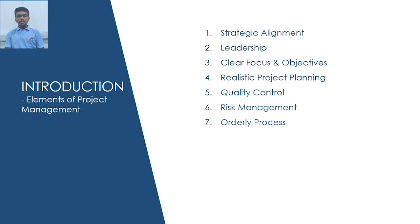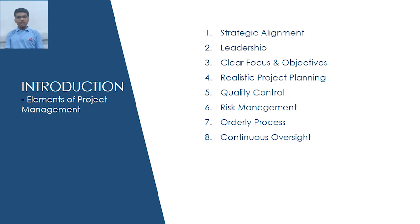Seventh, orderly process. It ensures that the proper project process is followed throughout the project life cycle. Proper planning and process makes a massive difference as the team knows who does what, when and how. Project management matters because without an orderly and easily understood process, companies risk failure, attrition, loss of employee trust and resource wastage.